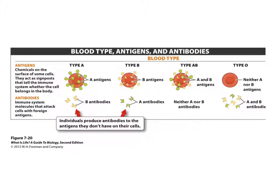So what happens when we mix these antigens from different blood types? If you give a person with type B blood a type A blood transfusion, their bodies will send out antibodies to attack that foreign antigen. This means that the blood will clot or agglutinate in their vessels. This is a deadly condition.